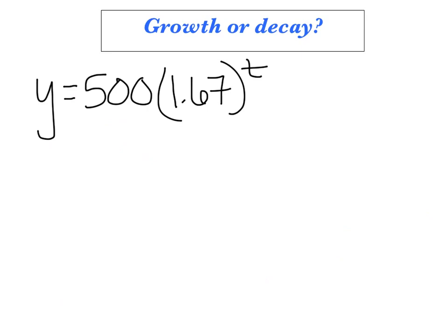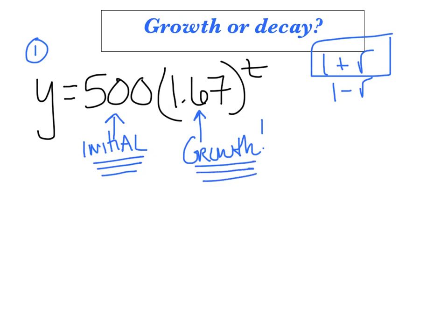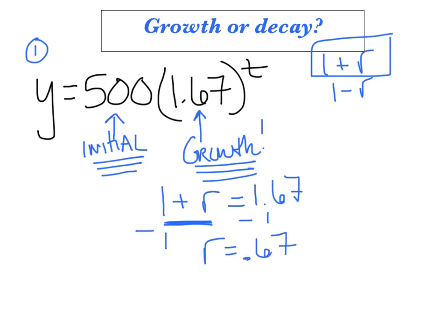The last thing to cover: determining from an equation whether it's growth or decay and finding the rate. Example 1: y equals 500 times 1.67 to the t. The 500 is the initial amount. Since 1.67 is greater than one, this represents exponential growth. Setting one plus r equals 1.67 and subtracting one gives r equals 0.67, which is a 67% growth rate.